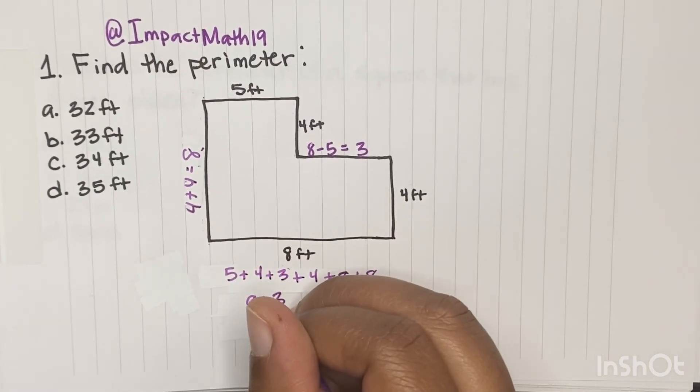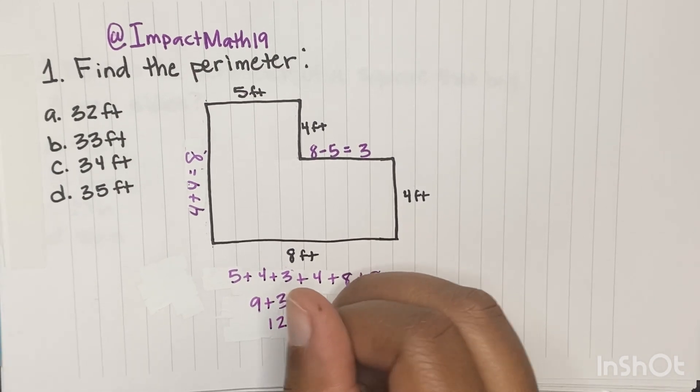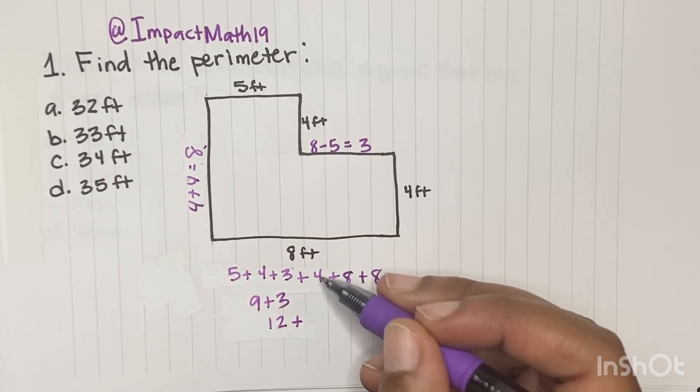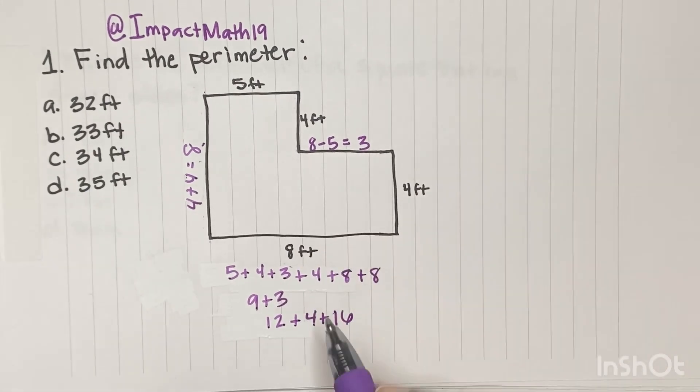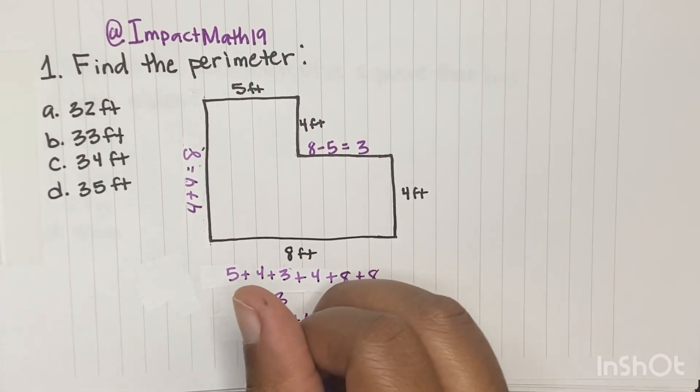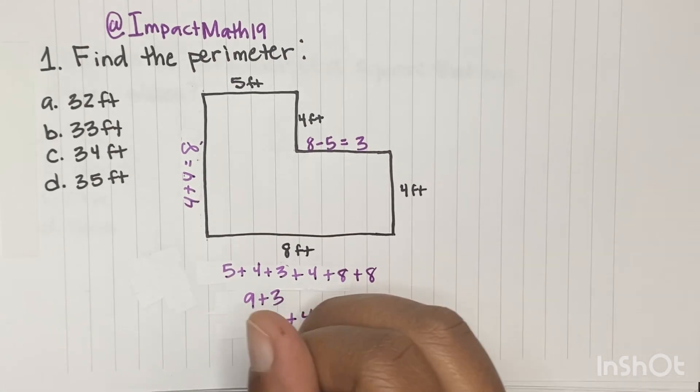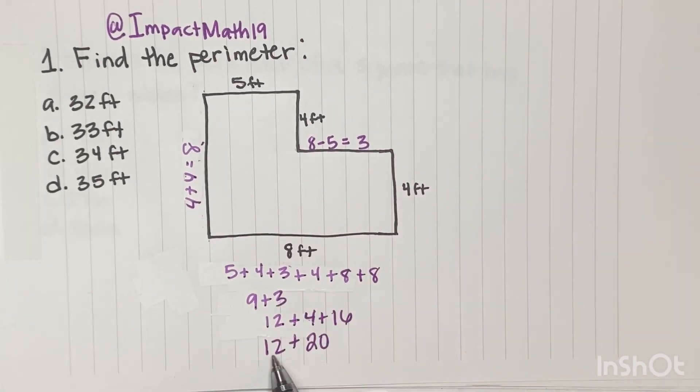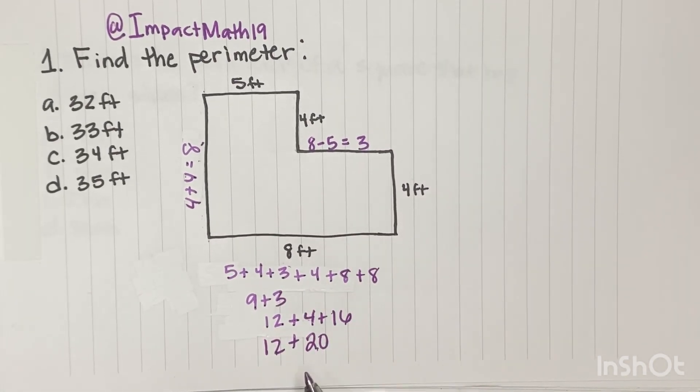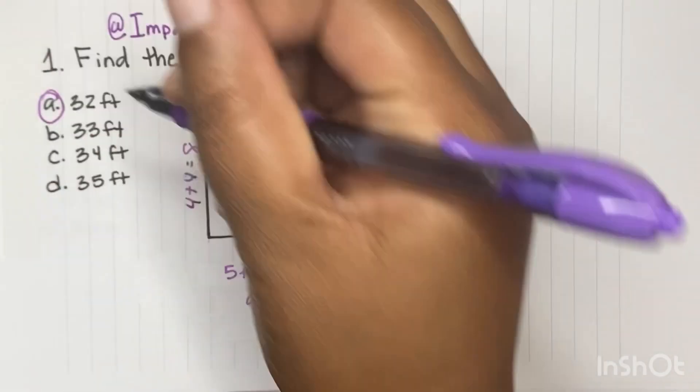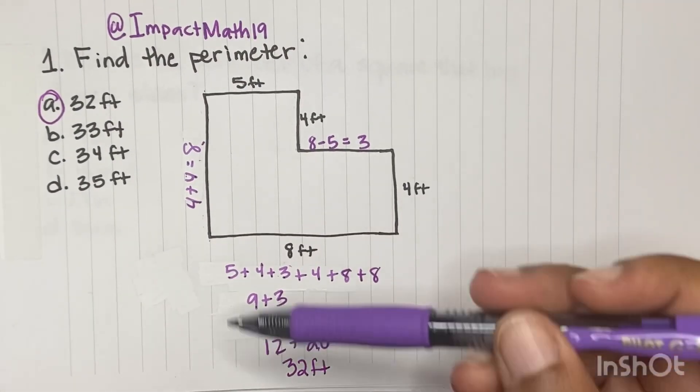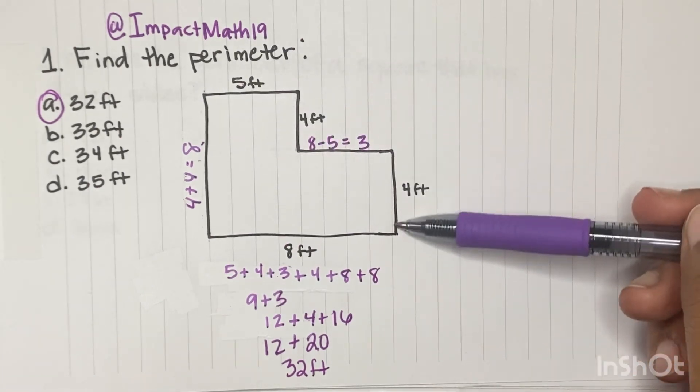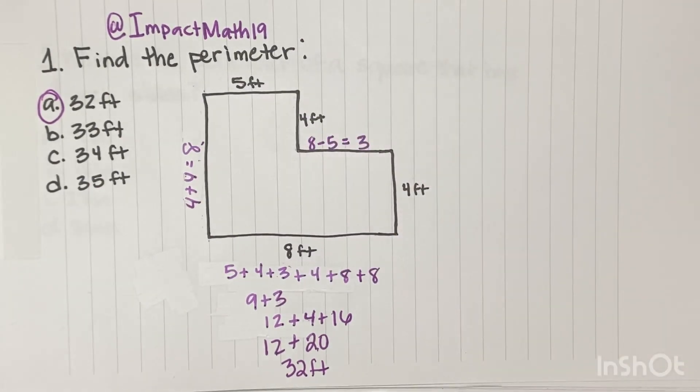So 5 plus 4 is 9, 9 plus 3 is 12. And then we can add 4, 8 plus 8 is 16, 16 plus 4 is 20. Drop down 12, and then 12 plus 20 is 32. So this whole perimeter would be 32 feet. Let's go to the next.